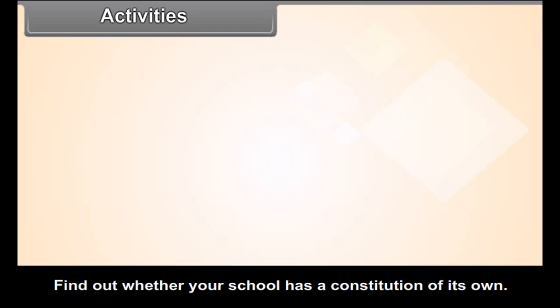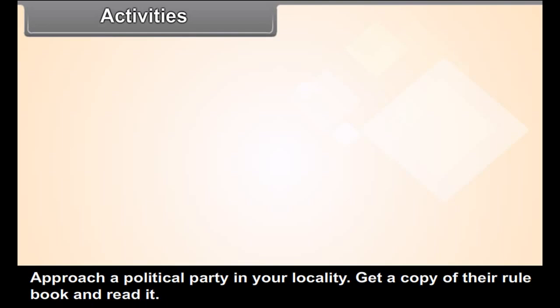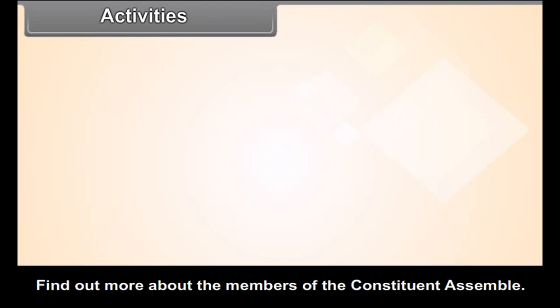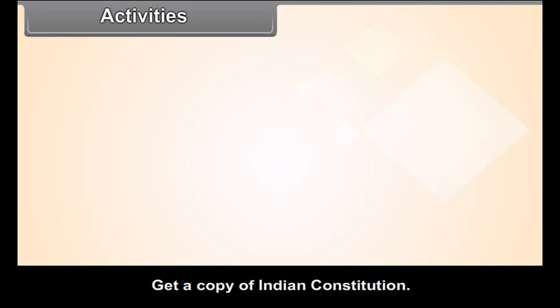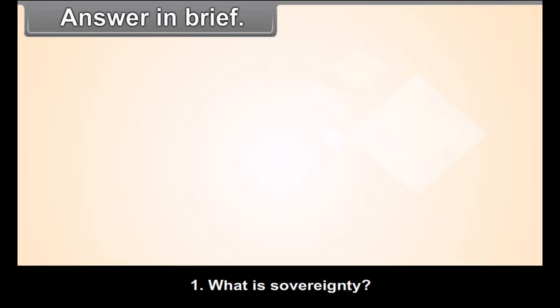Activities: Find out whether your school has a constitution of its own. Approach a political party in your locality and get a copy of their rule book and read it. Find out more about the members of the Constituent Assembly and details of its different committees. Display a collection of photographs and short notes on the members of the Constituent Assembly. How many women members did the Constituent Assembly have? Try to collect more information about them. Get a copy of the Indian Constitution and prepare a constitution for your class. Why didn't implementation begin on 26th November when it was adopted?